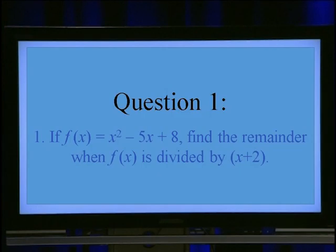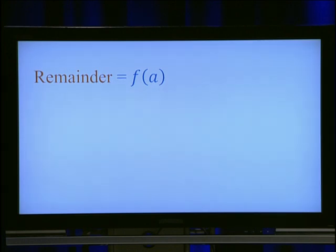Now let us solve a question applying remainder theorem. If f(x) = x² minus 5x plus 8, find the remainder when f(x) is divided by x plus 2. According to the remainder theorem, the remainder is given by f(a). Before finding f(a), first determine the value of a by equating the divisor to 0.